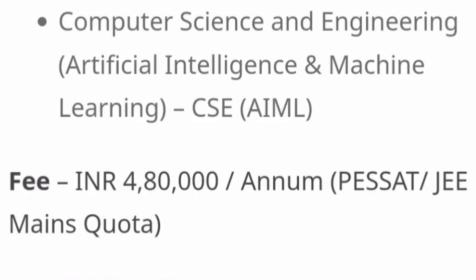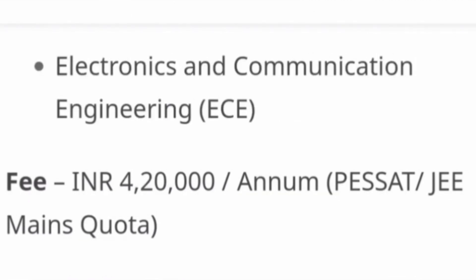This applies to all students applying through PASSET quota or KCET quota — fees remain the same. For KCT students, fees are lower, around 1.2 to 1.3 lakh rupees per year, which I will cover in a different video. Now, for EC — Electronics and Communication Engineering — the fees are slightly less than CSC, at 4.2 lakh rupees per year, applicable for both PASSET and KCET admission modes.